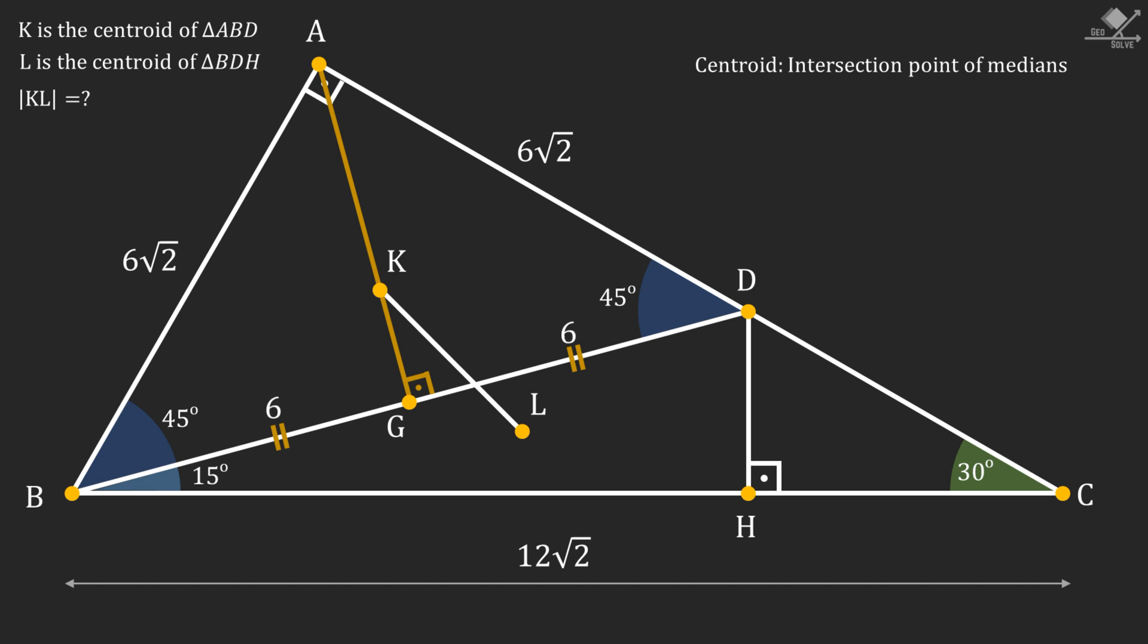The equal base parts will be 6 units each. Using midpoint theorem on right-angled triangles, we can see that the line segment AG will also be 6 units. Now, remember another property of the centroids, that they will divide the medians in 2 to 1 ratio.